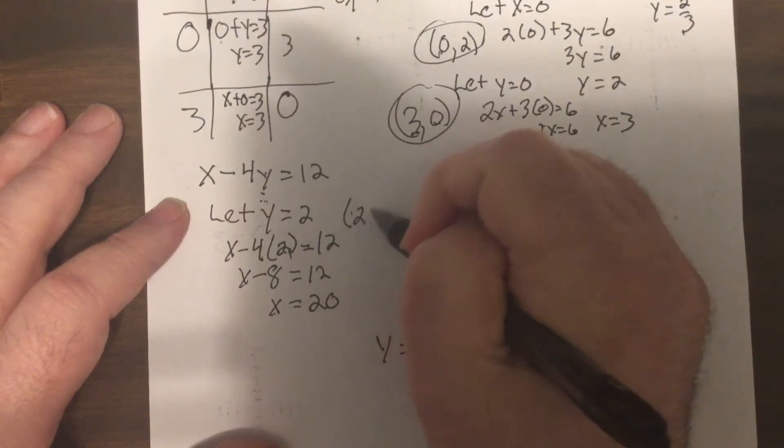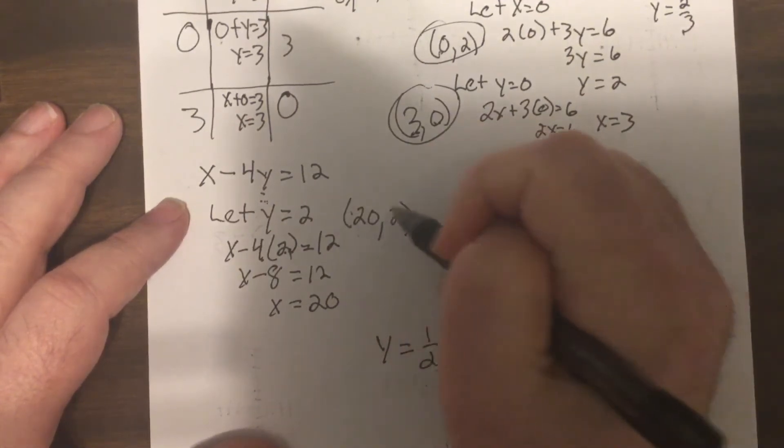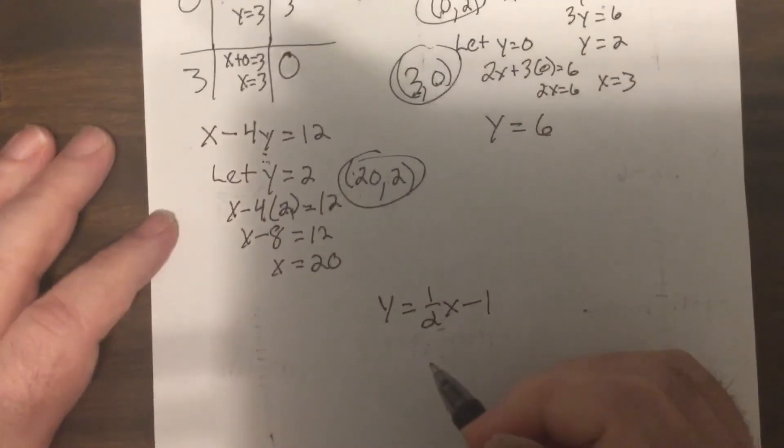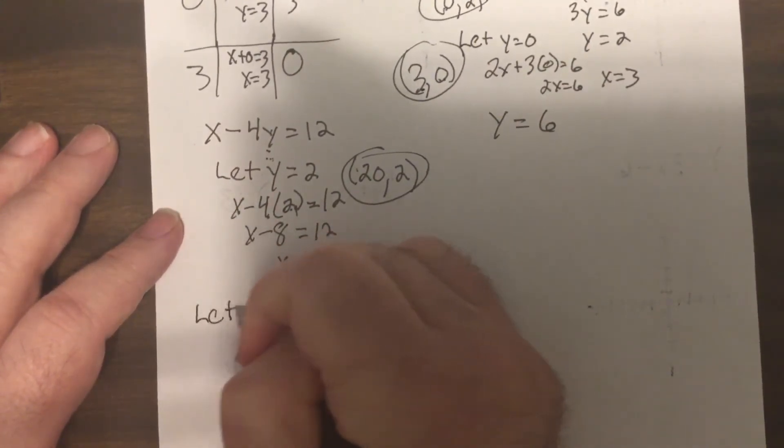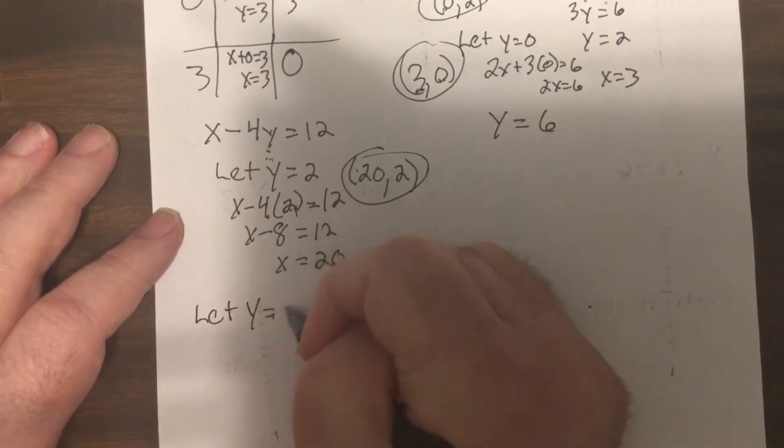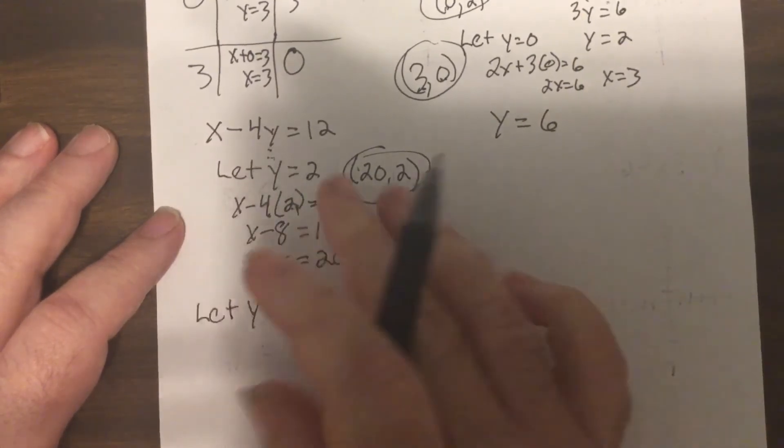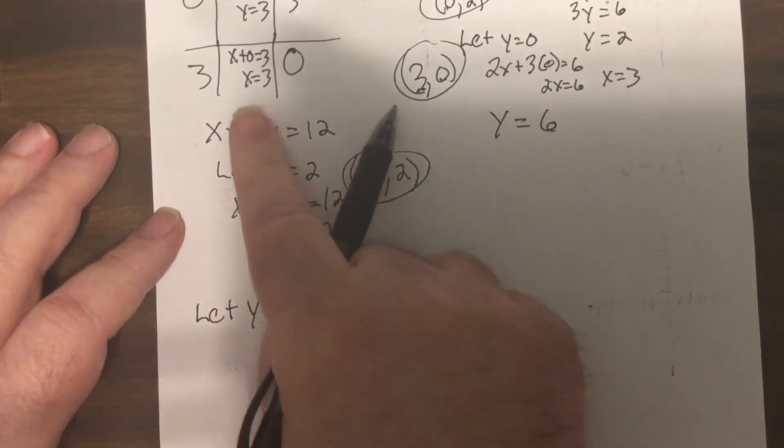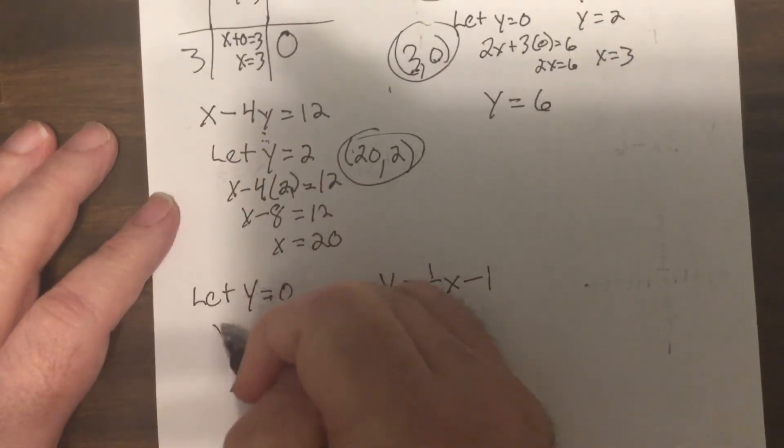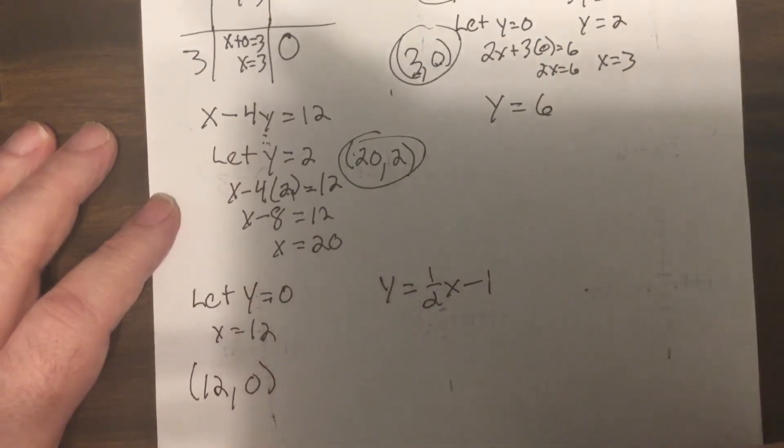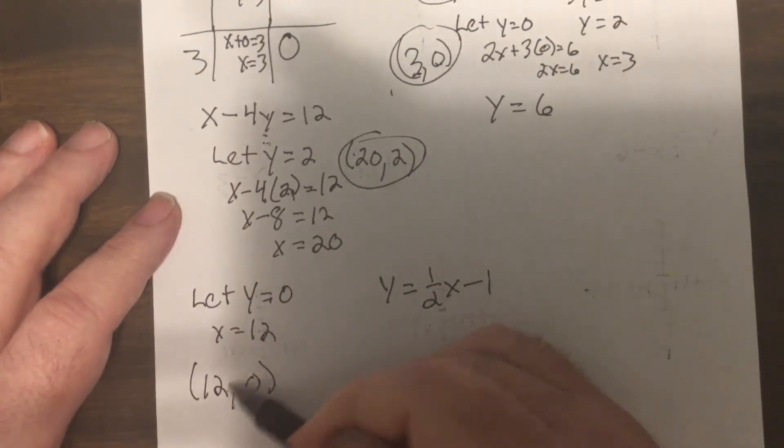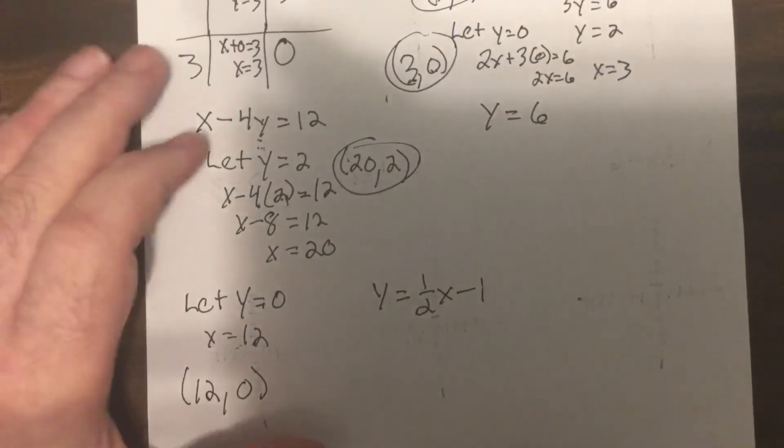So this is, four times two is eight, so I got X minus eight equals twelve. Add eight to both sides, X equals twenty. So I have another ordered pair, twenty, two. Now let's do the zeros. Let Y equals zero, find the X intercept.